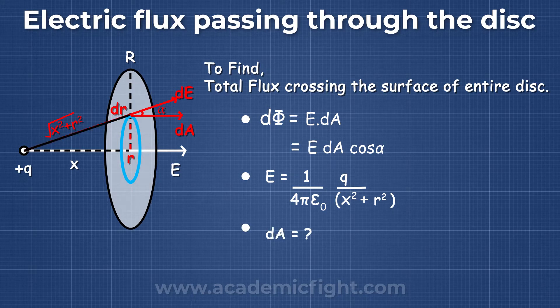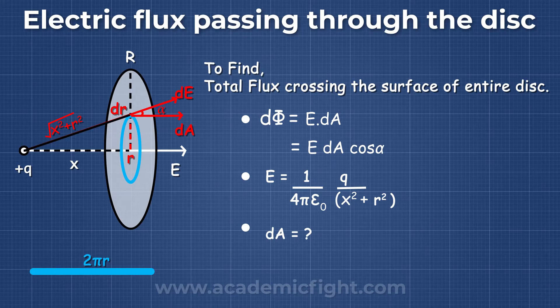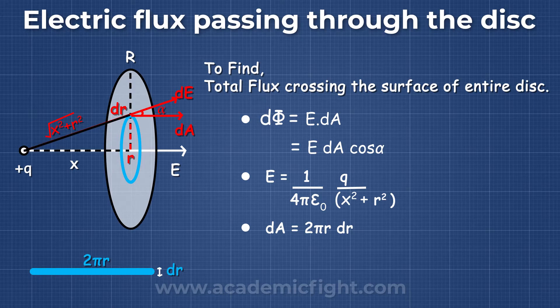Now we need the value of dA. If we straighten the ring, we see that the length of the ring is 2πr, the circumference of the ring, and the width of the ring is dr. Therefore, dA = 2πr dr.